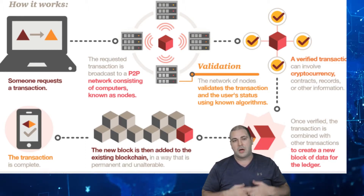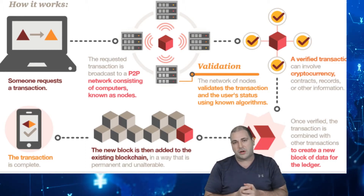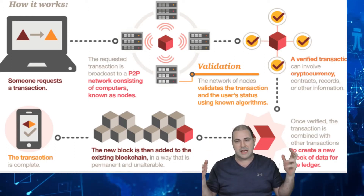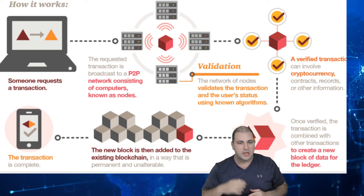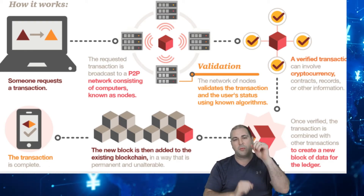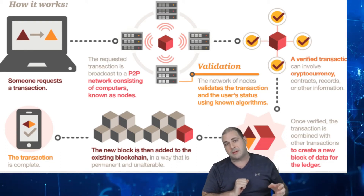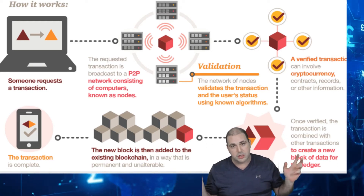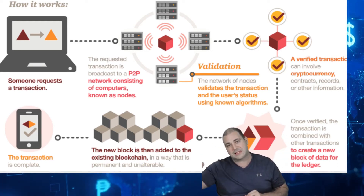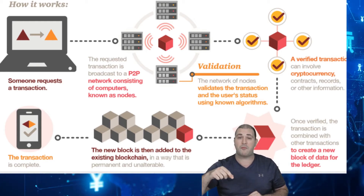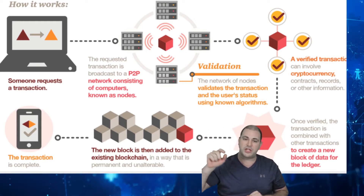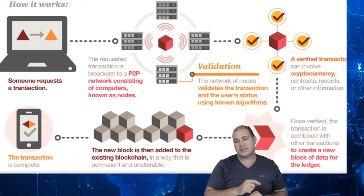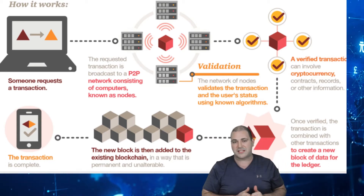Look at this. When we start, someone requests a transaction — so I want to buy a chocolate bar from you, as an example. The chocolate bar can represent a cryptocurrency. So we do the exchange. Now when we do that exchange, it has to go and be validated by nodes or computers. Those computers then say yes, that transaction happened. We call them confirmations. All these confirmations happen to make sure that yes, that is a real transaction.